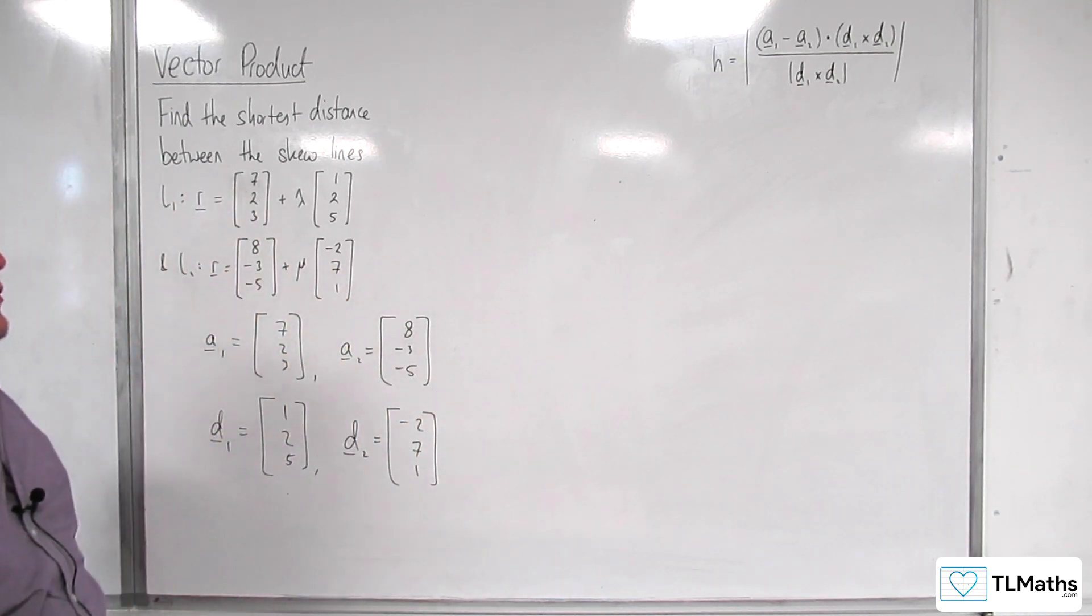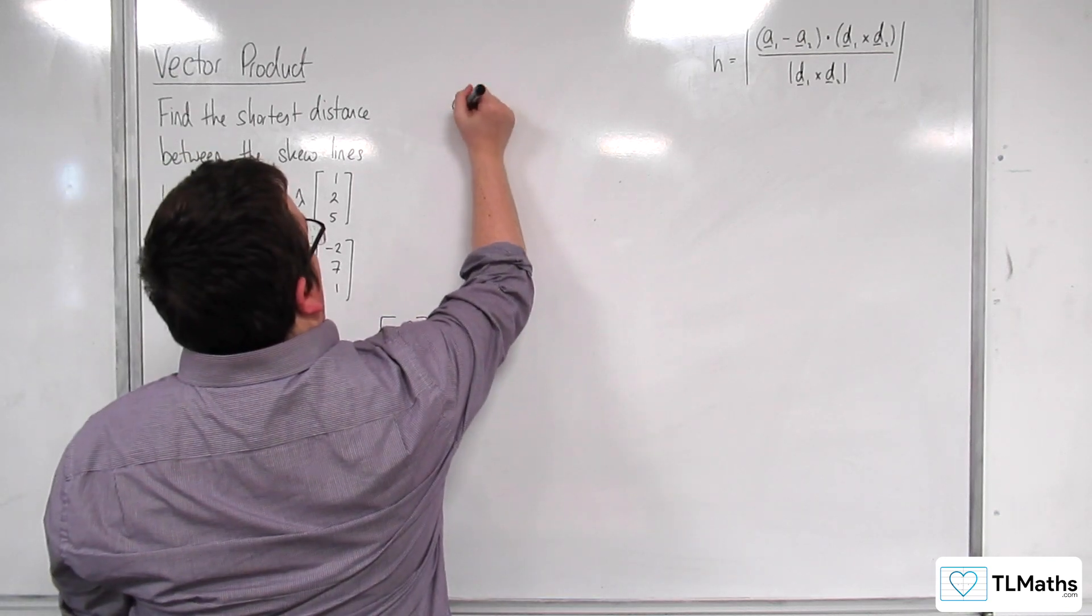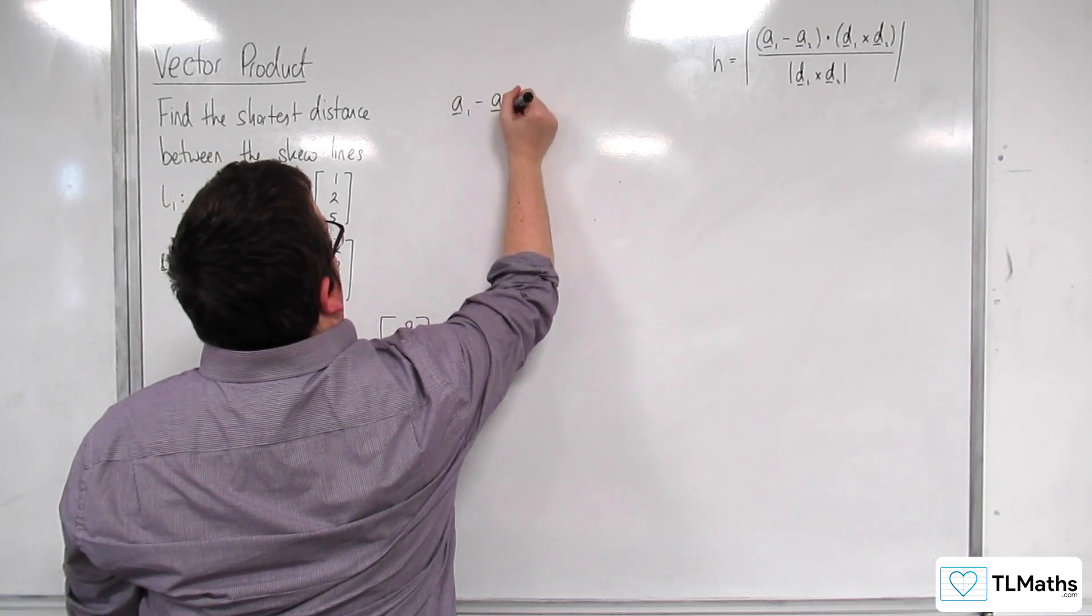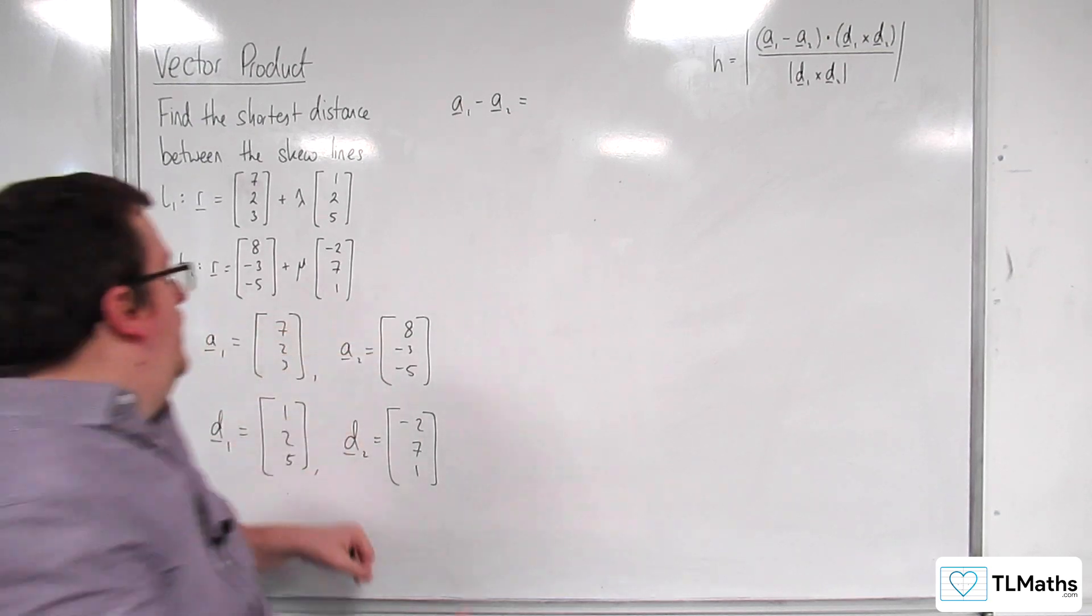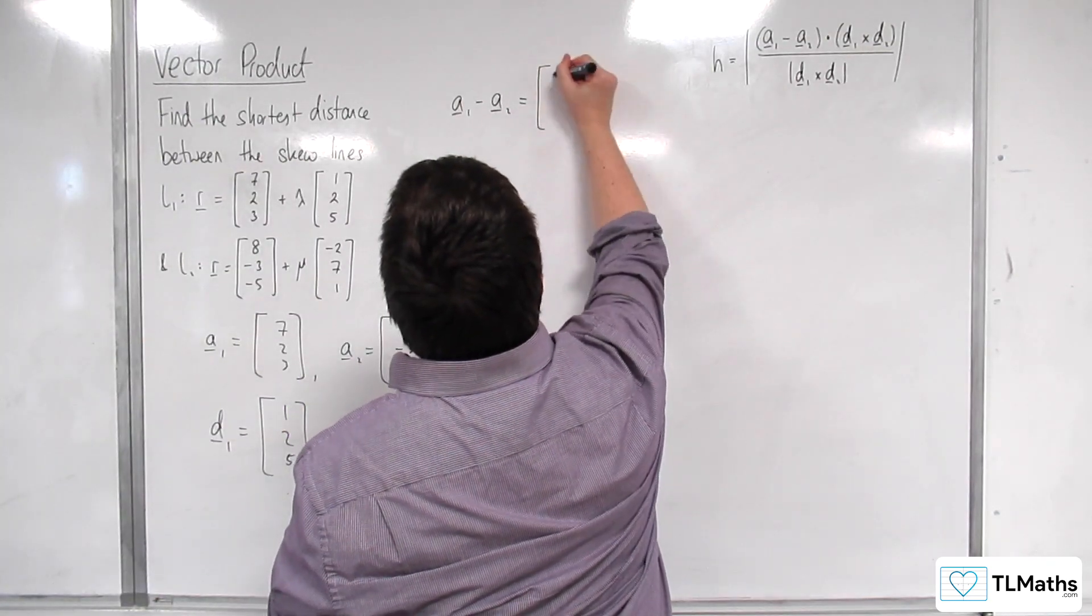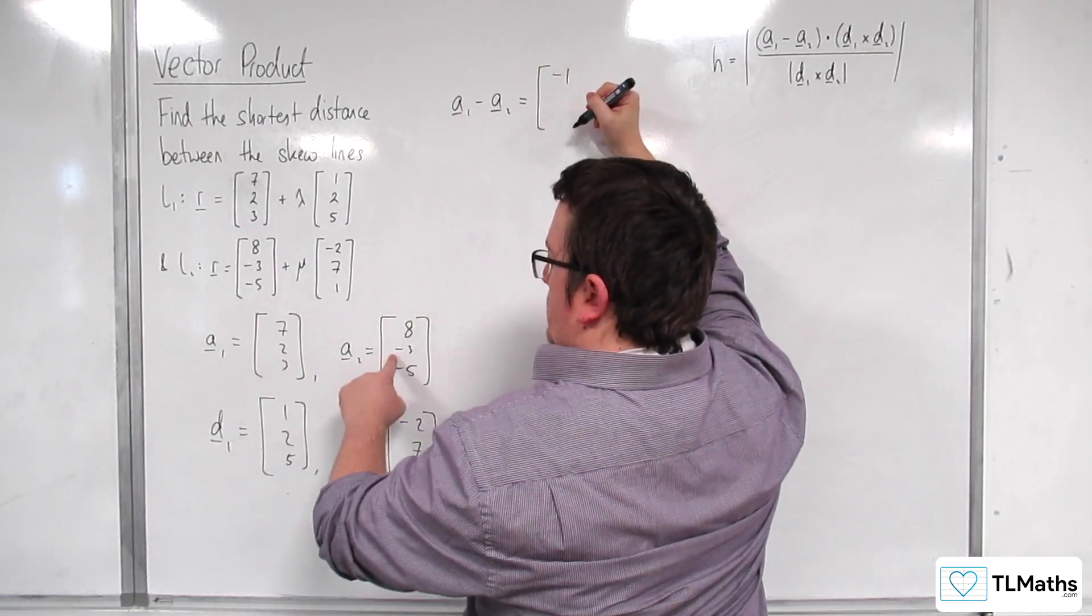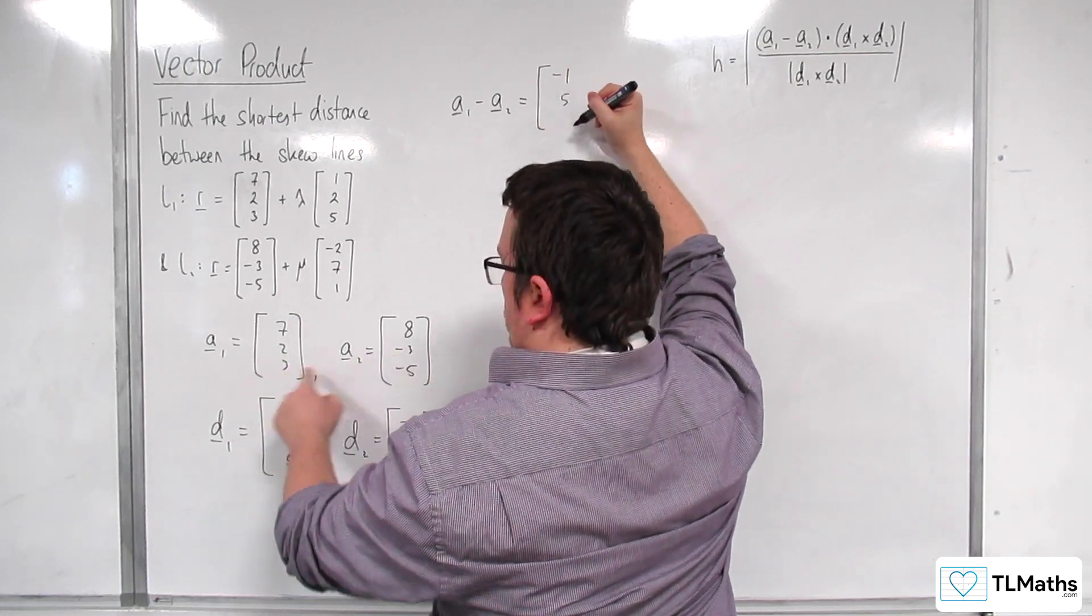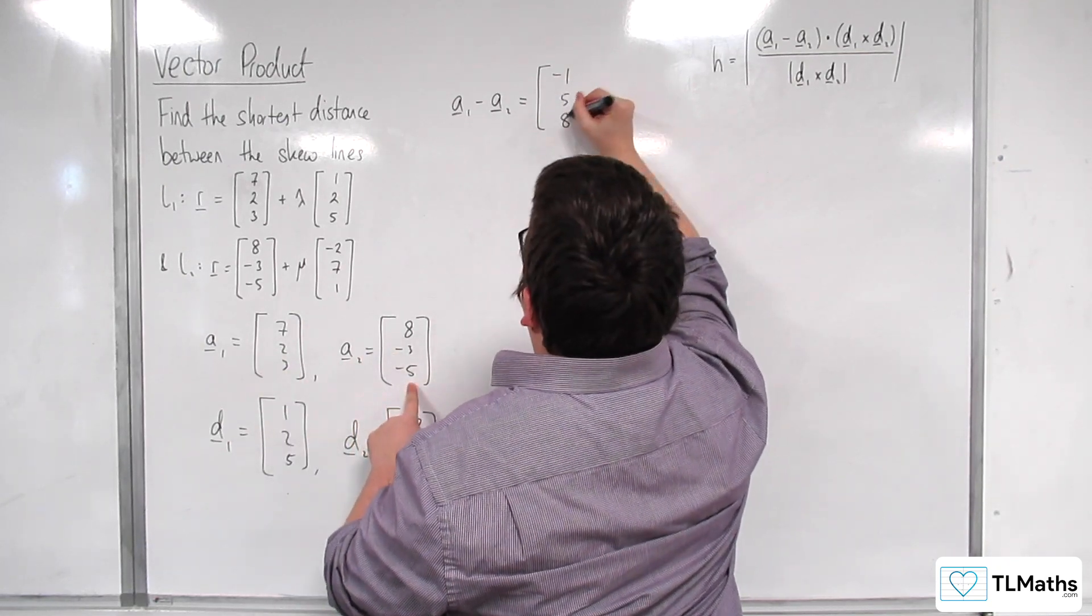Okay, so we're going to need to find A1 take away A2. So, 7 take away 8 is minus 1. 2 take away minus 3 is 5. 3 take away minus 5 is 8.